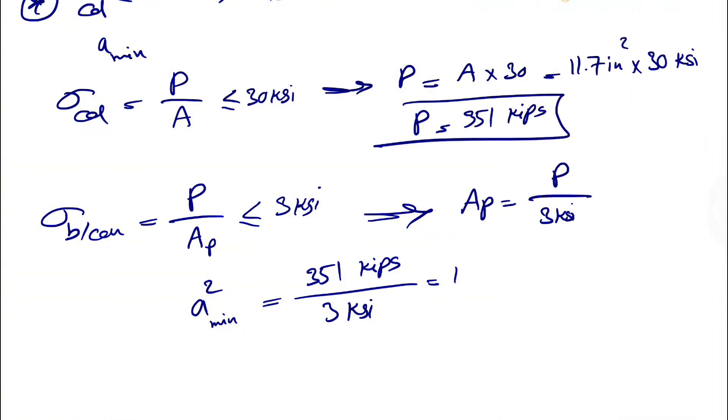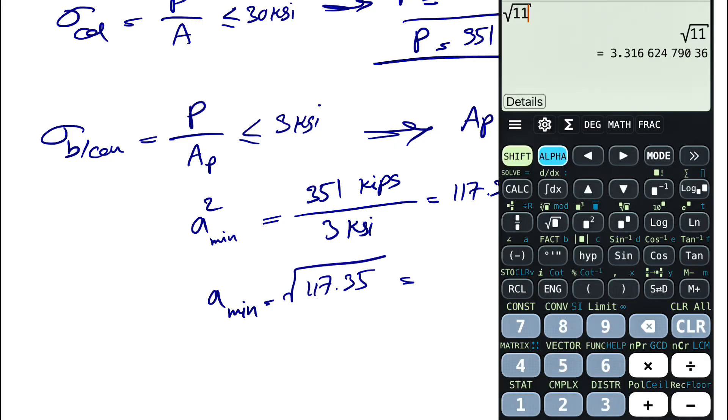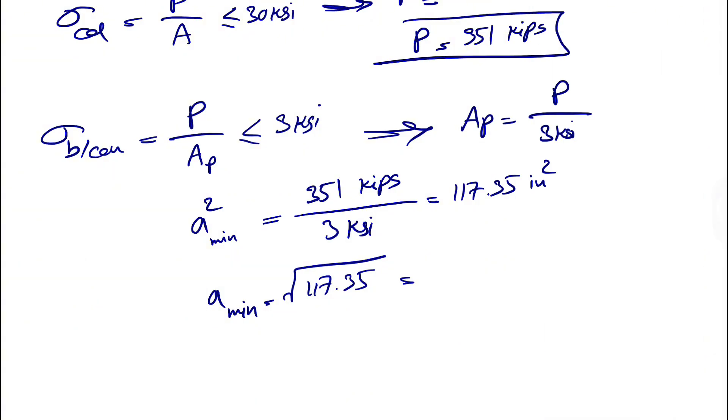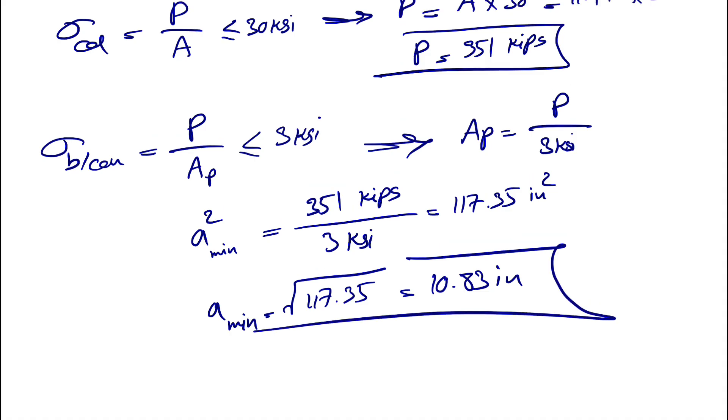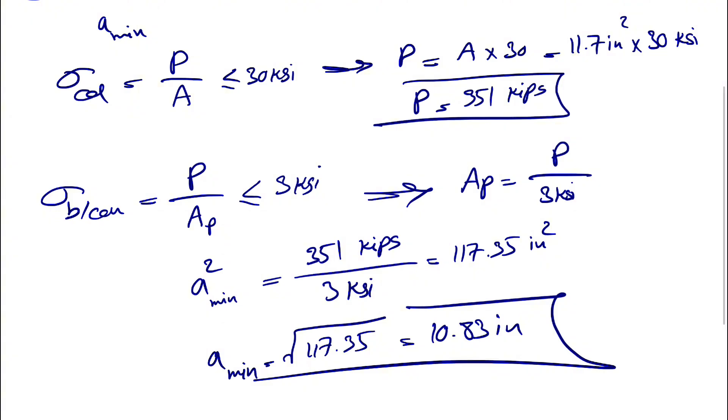That's 117.35 inches squared. To find the side of the plate, we take the square root of 117.35, which is 10.83 inches. This is the minimum A - anything above this would be good, but we're trying to be economical. This dimension is safe and satisfies the stress conditions.